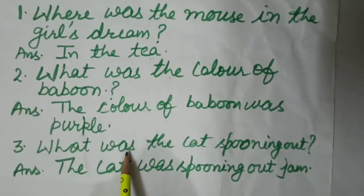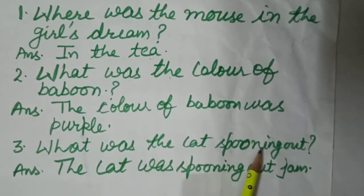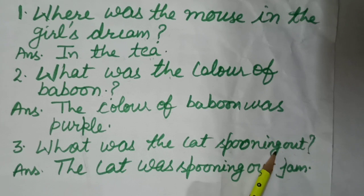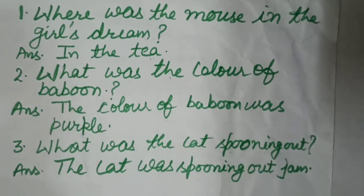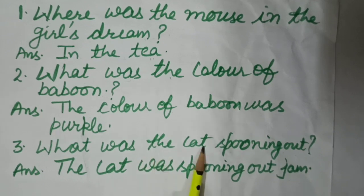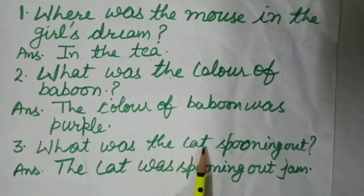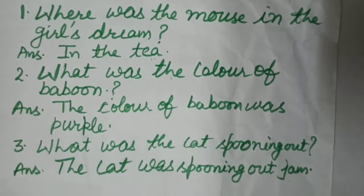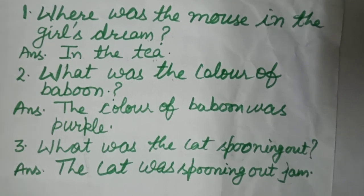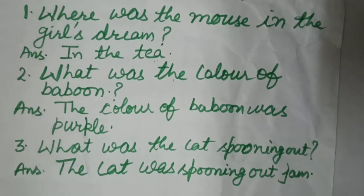Third question: What was the cat spooning out? The cat was spooning out jam. You only need to learn the word 'jam' and all other words come from the question. In this way it is very easy to learn question answers.